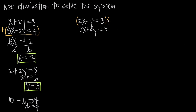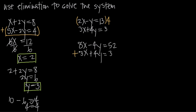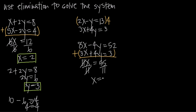When we multiply by 4, we distribute across every term on both sides. So 4 times 2x gives us 8x, 4 times negative y gives us negative 4y, and 4 times 13 is 52. Writing the second equation underneath — 3x plus 4y equals 3 — we now have negative 4y and positive 4y. Adding these together: 8x plus 3x is 11x, negative 4y plus 4y is 0, and 52 plus 3 is 55. Dividing both sides by 11, we get x equals 5.